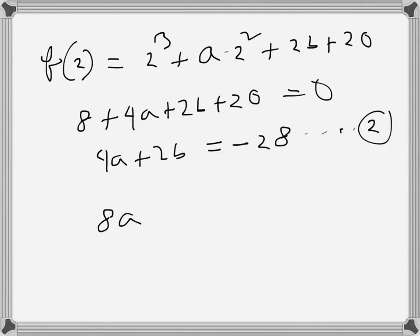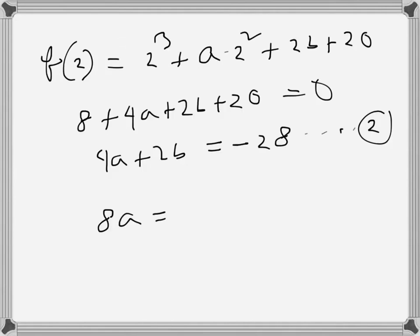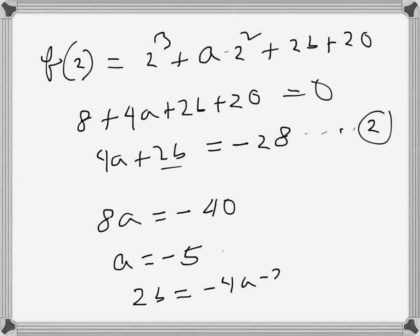Adding Equation 1 and Equation 2, the -2b and +2b cancel, so 8a = -40, giving a = -5. To find b, from Equation 2: 2b = -4a - 28 = -4(-5) - 28 = 20 - 28.